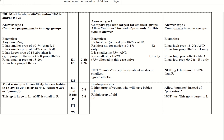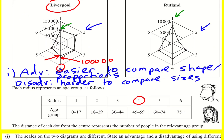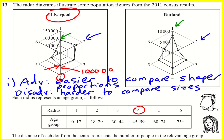Looking at the mark scheme: you must state the group most likely to have babies — I've gone with 18 to 29 — and note that this group is large in Liverpool and small in Rutland. I'd actually focus on the 18-to-29 group as the key comparison. It's a hard question to explain, but I've done my best — hope that's okay. Thanks.